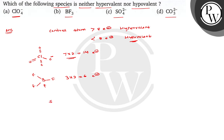In the case of sulfate, the structure is S with double bond O, double bond O, O⁻, and O⁻. The central atom is sulfur and it is having 6 bond pairs, so the total number of electrons is 12. So with 12 electrons, this is hypervalent.